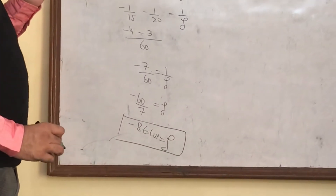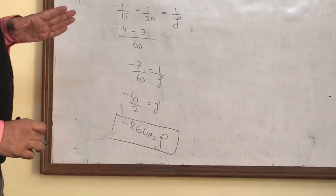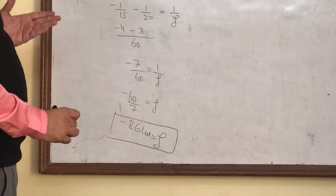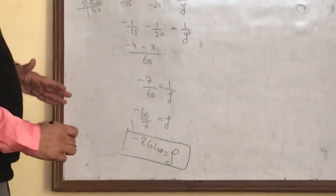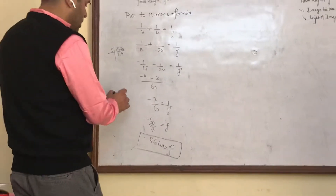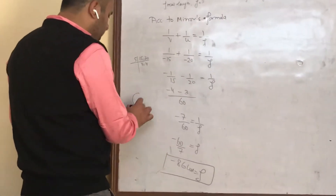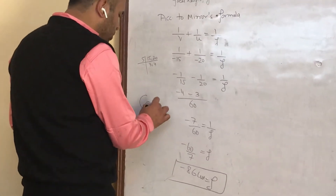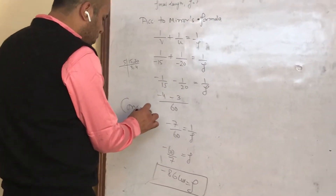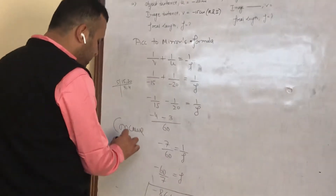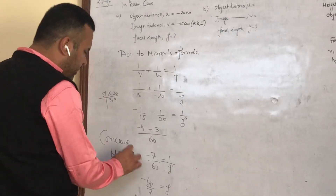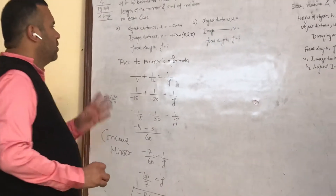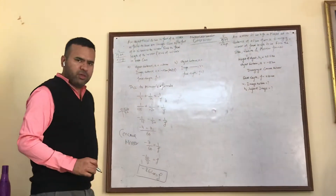So the kind of mirror: focal length is negative, which means it is a concave mirror. In part A, the mirror is a concave mirror.